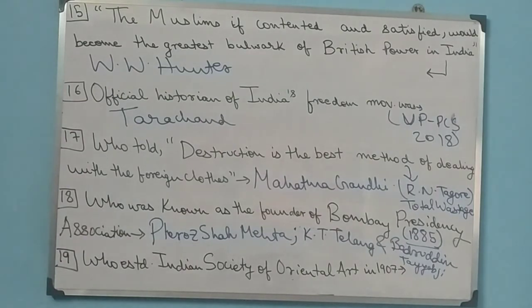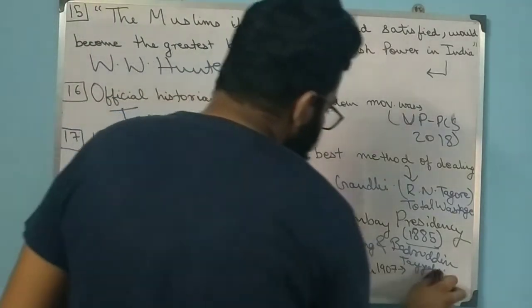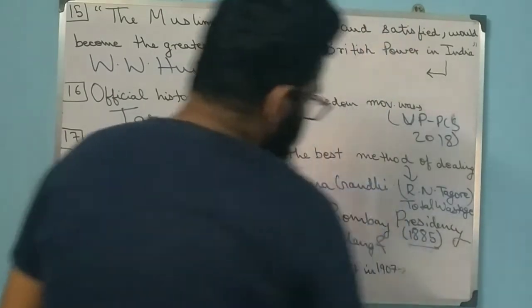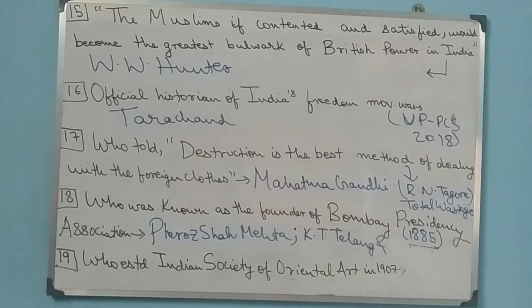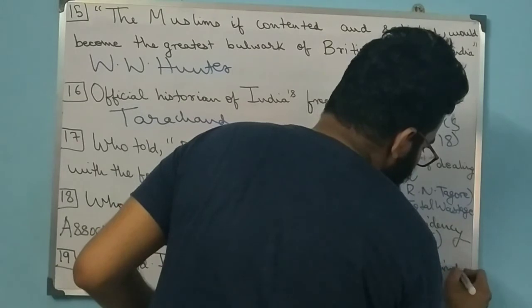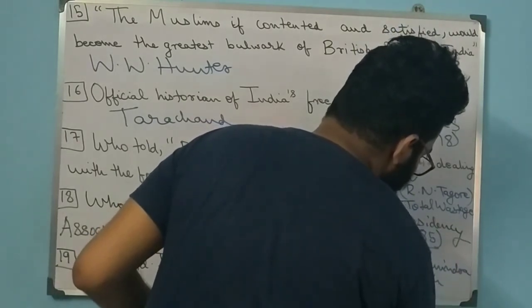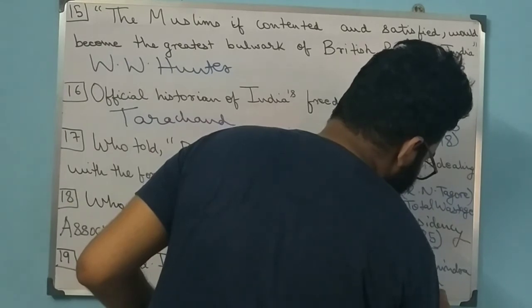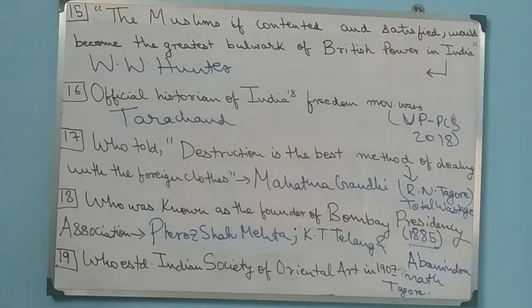Question 19: Who established the Indian Society of Oriental Art in 1907? The answer is Abanindranath Tagore. He established the Indian Society of Oriental Art in 1907. He also had a brother named Gaganendranath Tagore.